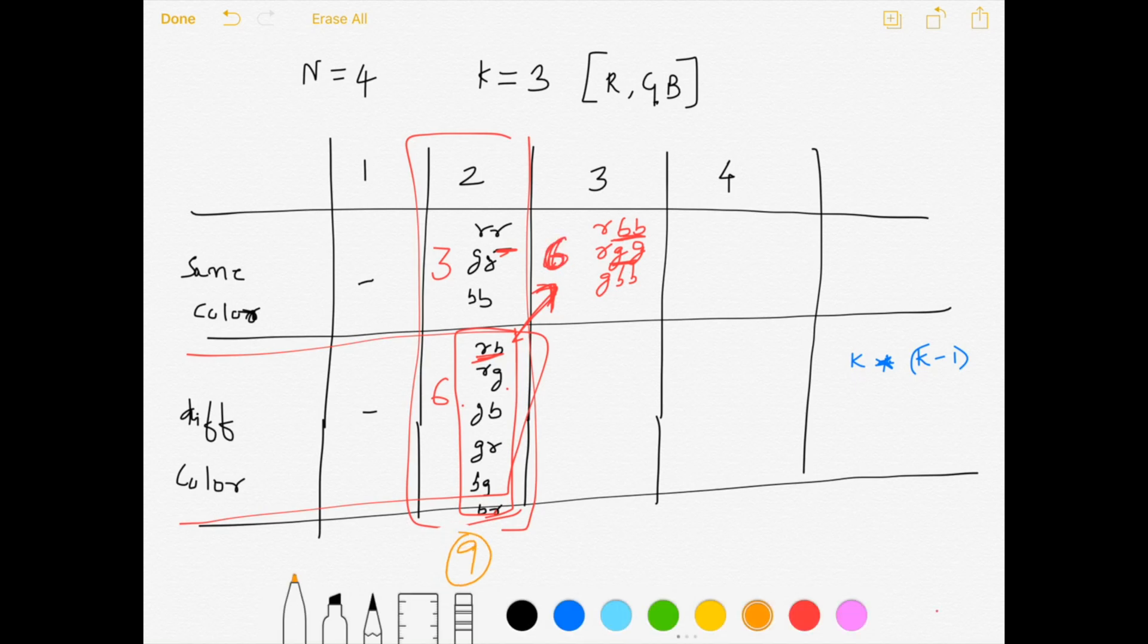To find the number of combinations for different color for post three, all we need to do is take the total number that we calculated for the previous post, which is nine and multiply it by K minus one because we have already calculated the number of combinations like which is let's say R, B, R, G. All we need to do is add another color to that which is not the same as the previous color that we have already used.